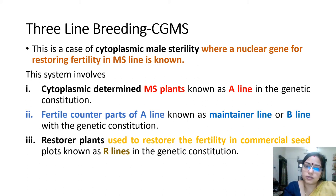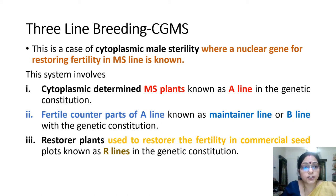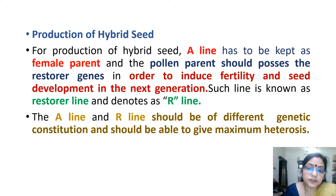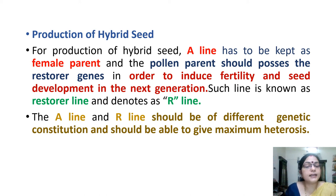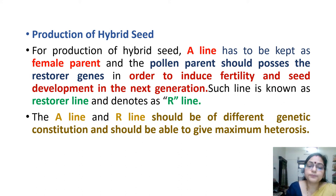The A-line has cytoplasmic male sterility. The B-line is fertile and may be heterozygous. The R-line is a restorer line and must be fertile. These lines are utilized in hybrid seed production. The A-line is kept as the female parent, and the pollen parent must possess the restorer gene in order to induce fertility and seed development in the next generation. Such a line is known as the restorer line, denoted as the R-line.